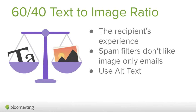The theory is that spammers sometimes display information in large images instead of text so filter programs can't read the content. You can use images, just make sure your email isn't 100% or even 90% images only. And lastly, use alt text. People may have images turned off on their device or email provider. Alt text is essentially a label for the image so when they see an empty space, they know the image is supposed to be there and the alt text describes it.